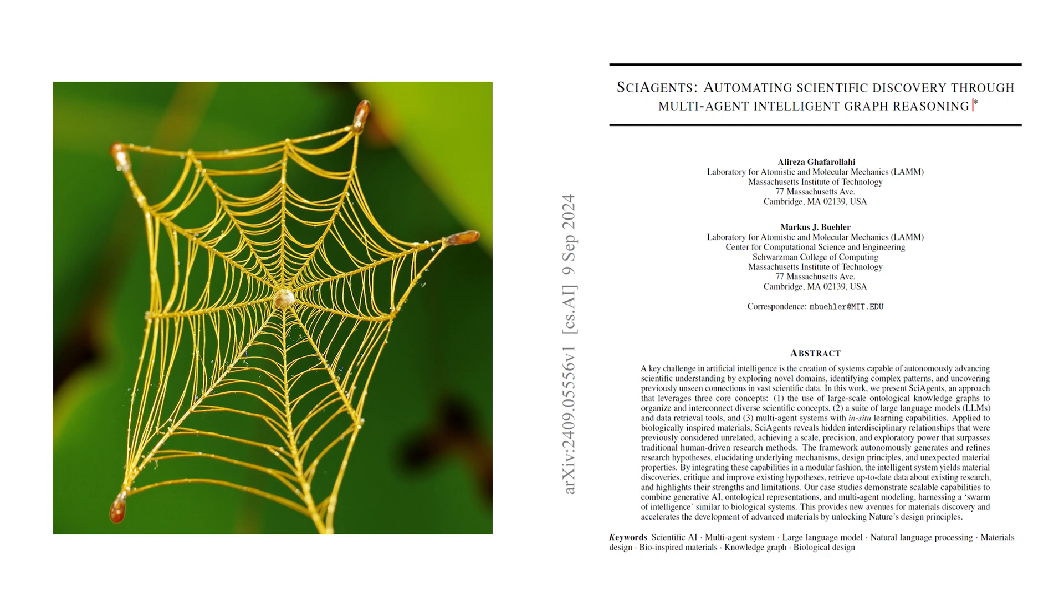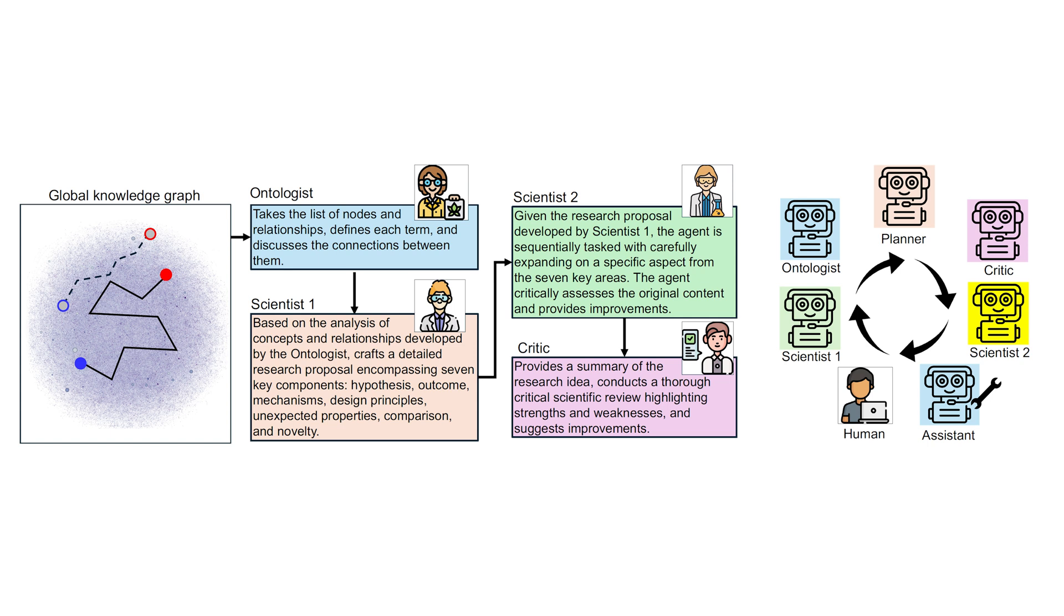One of the exciting applications of SciAgents is in the field of biologically inspired materials. Biologically inspired materials. Like materials designed based on nature? Exactly. Nature has evolved some incredibly efficient and effective materials. Think spider silk or shark skin. By studying these natural materials, scientists can develop new materials with advanced properties. So SciAgents is helping to unlock nature's design secrets? Yes. Let me give you an example. SciAgents was able to generate a novel hypothesis by connecting the concepts of silk and dandelion pigments. Silk and dandelion pigments. That seems like an unusual combination.